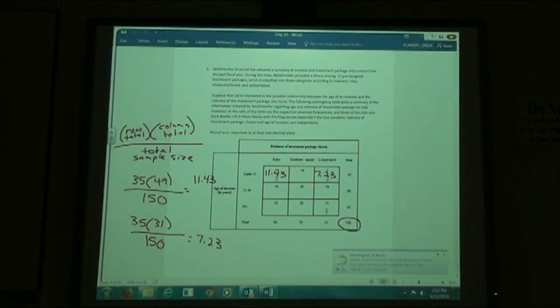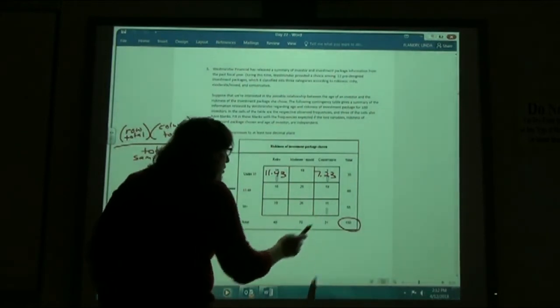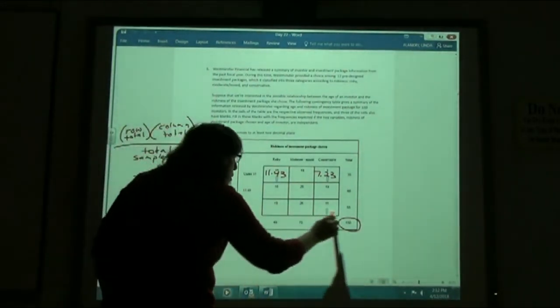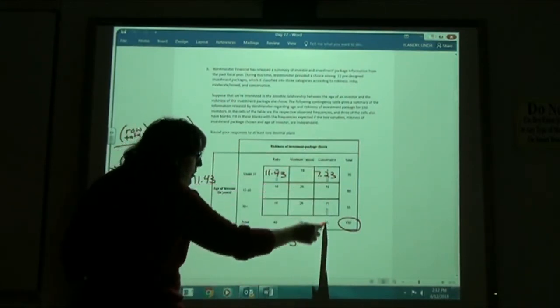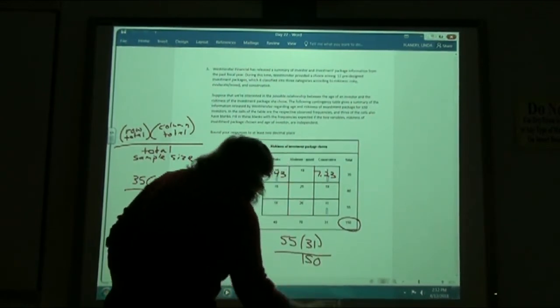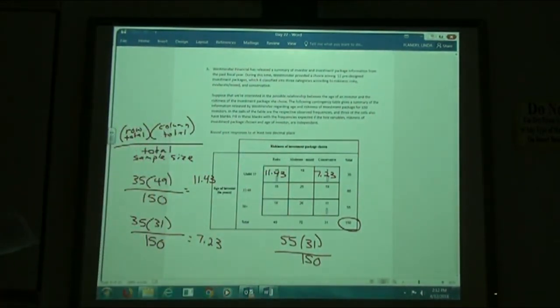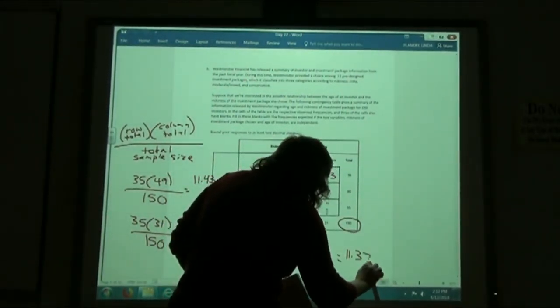And my last one over here at the 50 plus, how many are conservative? So my row total is 55. My column total would be 31 divided by my sample size, 150. So 55 times 31 divided by 150 gives you 11.37.